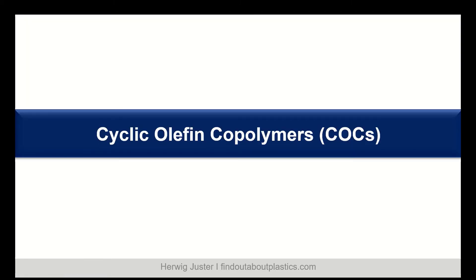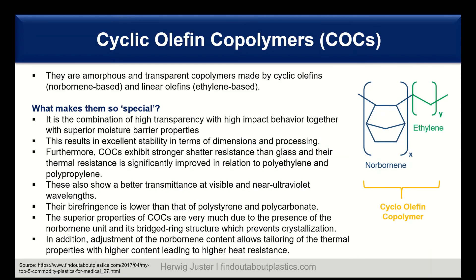Now we come to the third polyolefin: cyclic olefin copolymers, or COCs. These are amorphous and transparent copolymers made from cyclic olefins — norbornene-based — and linear olefins — ethylene-based. What makes COCs special is the combination of high transparency with high impact behavior, together with superior moisture barrier properties. This results in excellent dimensional stability during processing. COCs also have stronger shatter resistance than glass, and their thermal resistance is significantly improved compared to polyethylene and polypropylene.